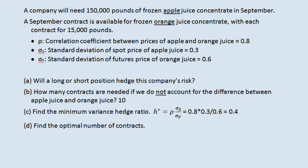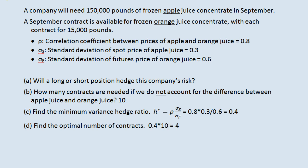This number can have any positive value — technically it could be negative, but don't be alarmed if you get an answer like 1.5 or 3; that would also be valid. In this example it happens to be 0.4. So find the optimal number of contracts. We found the hedge ratio — the ratio you would need compared to if they were the same thing. If we were using apple juice contracts to hedge apple juice, we'd need 10 contracts. But since we are using orange juice contracts and we figured out we need a ratio of 0.4, we need 0.4 times 10 contracts, or 4 contracts.